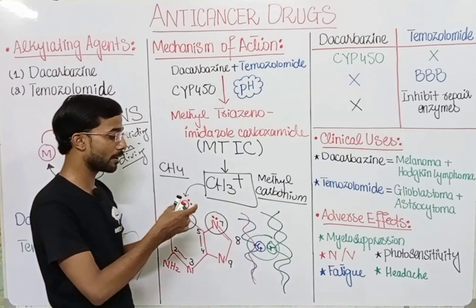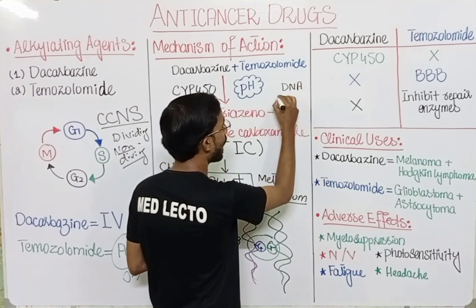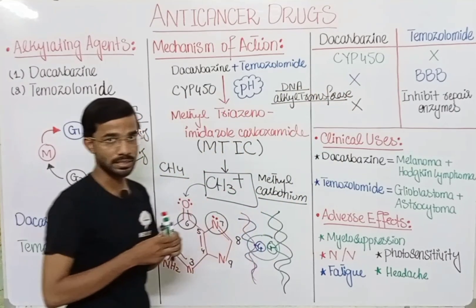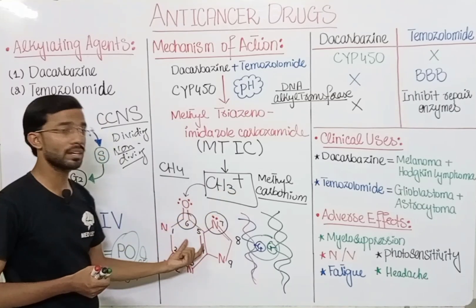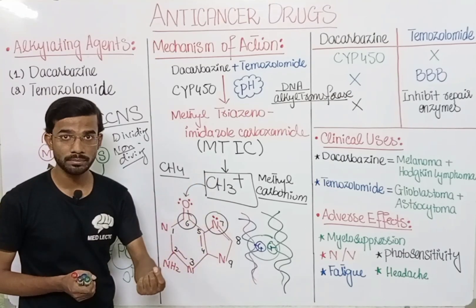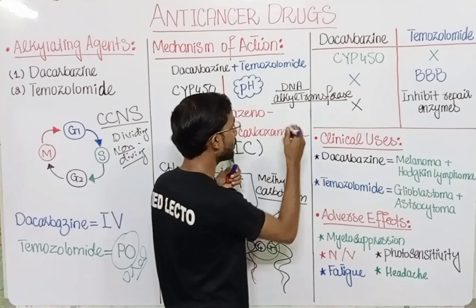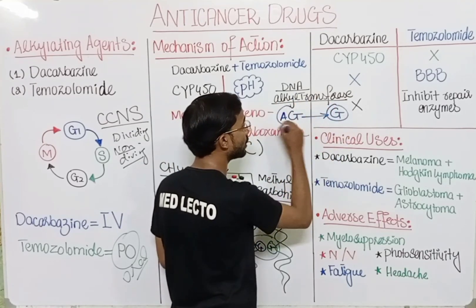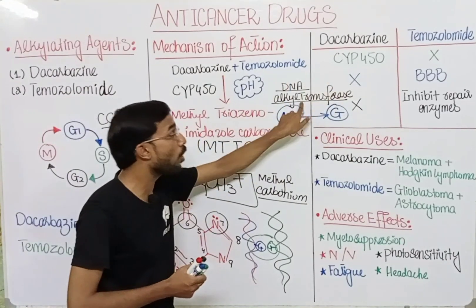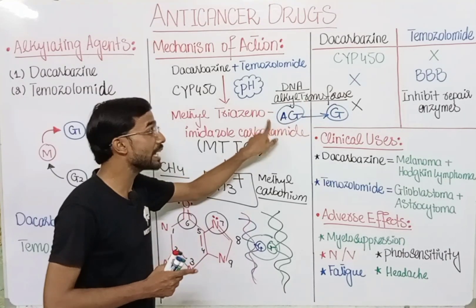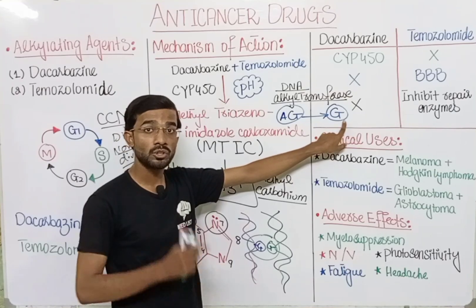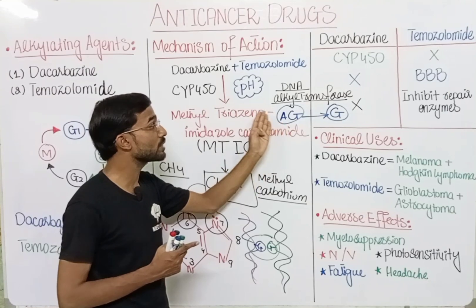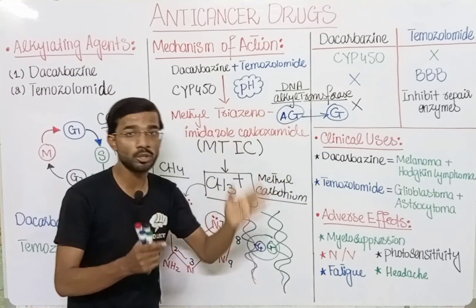Temozolomide has an additional action: it also inhibits the repair enzyme DNA alkyltransferase. This enzyme normally converts alkyl-guanine back to normal guanine, repairing the damage. Temozolomide blocks this enzyme, so alkyl-guanine cannot be converted back. Temozolomide therefore has two key functions: alkylating guanine and blocking its repair.